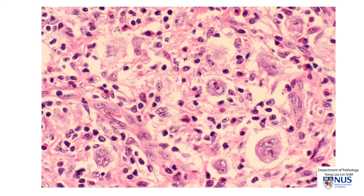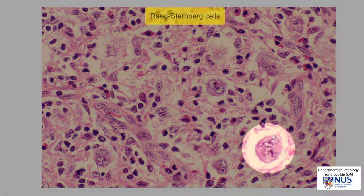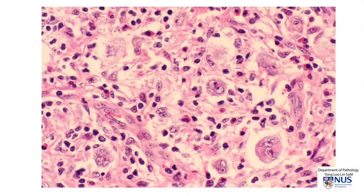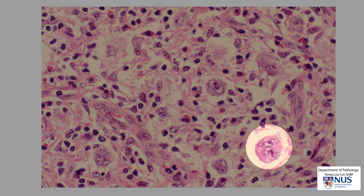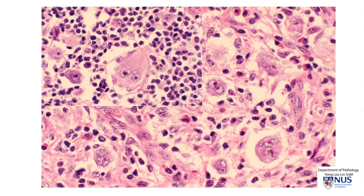Microscopically, the diagnostic features are the presence of these Reed-Sternberg cells. Sometimes they are also known as Hodgkin-Reed-Sternberg cells, or Hodgkin cells if they are mononuclear, meaning they have one nucleus. Classical Reed-Sternberg cells have a bilobed nucleus or two nuclei with a very prominent nucleolus each, and sometimes they can even be multi-nucleated. These are the neoplastic cells in Hodgkin lymphoma, and they are thought to be B lymphocytes that have some genetic defects. There are several subtypes of Hodgkin lymphoma, but in the classical types they all have these Hodgkin-Reed-Sternberg cells.